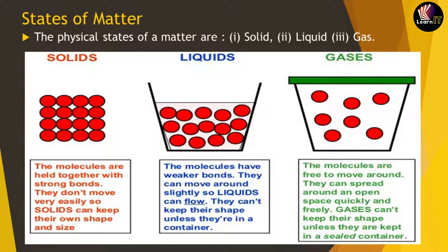Let us talk about the solid state. The molecules in a solid are held together with very strong bonds — they don't move very easily. Because of this, solids can keep their own shape and size. Whenever we see a solid object, it will definitely have a proper shape and a proper size.